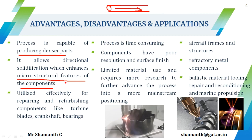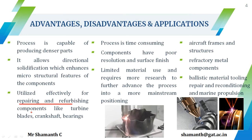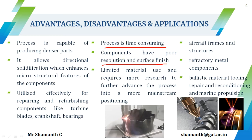It is also utilized effectively for repairing and refurbishing components like turbine blades, crankshafts, and bearings — heavy parts that can be repaired in complex areas. The disadvantages are that the process is time consuming, and the components have poor resolution and surface finish. Additionally, there is limited material use, and it requires more research to advance the process into a more mainstream position, including further research on the usage of more metal powders.